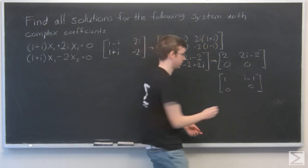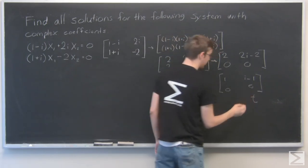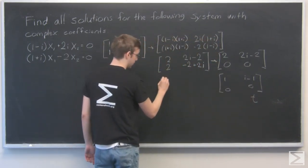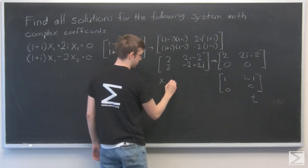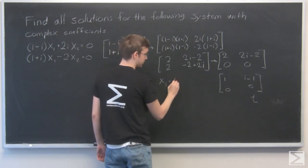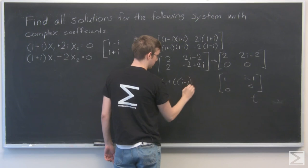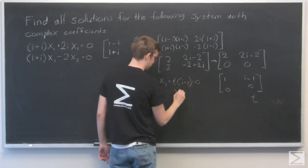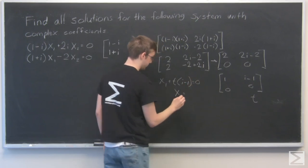We're going to assign x2 to be t. And that way we can solve x1 plus t times i minus 1 is 0.